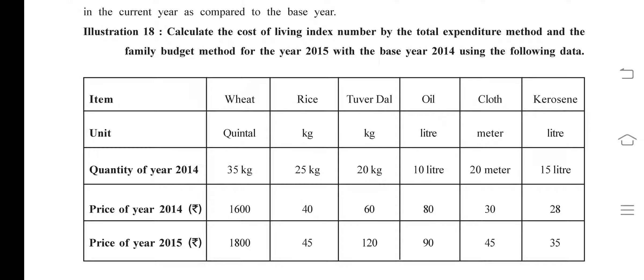Now we are moving towards illustration number 18, as we have completed 17. We will calculate the cost of living index number using the total expenditure method and the family budget method for the year 2015 with the base year 2014.